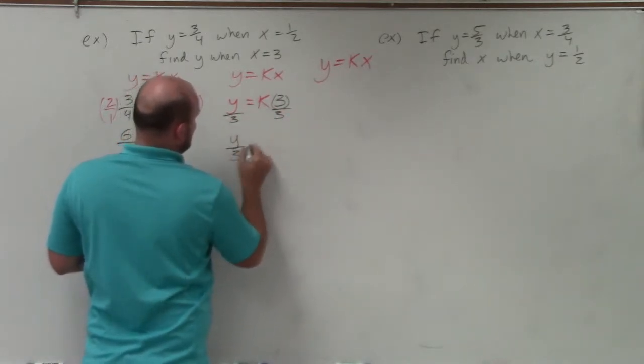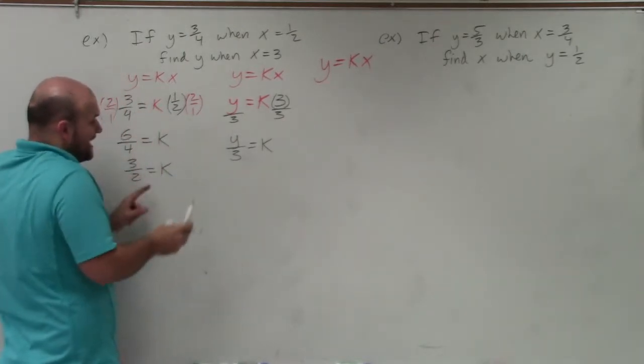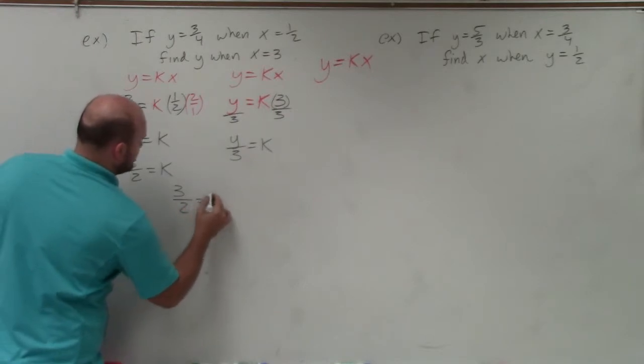And I'm left with y over 3 is equal to k. Now again, remember that both y varies directly with x. So therefore, their constants are the same. So I can set them equal to each other.